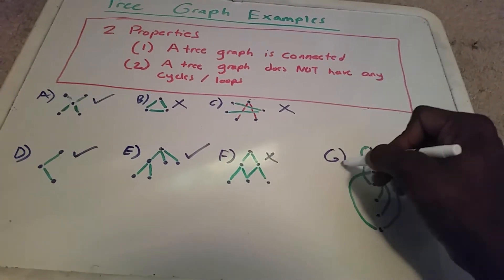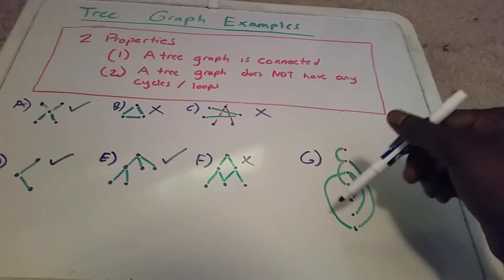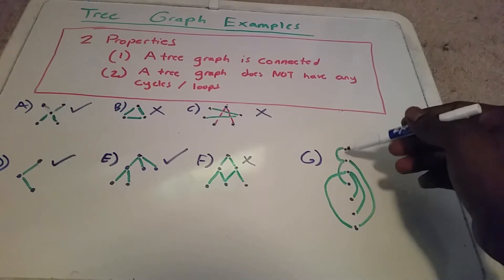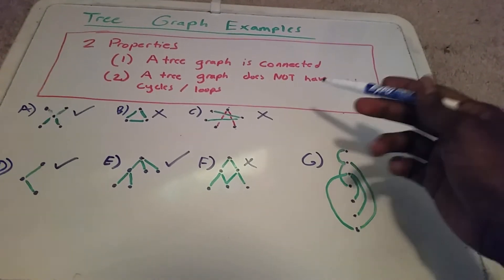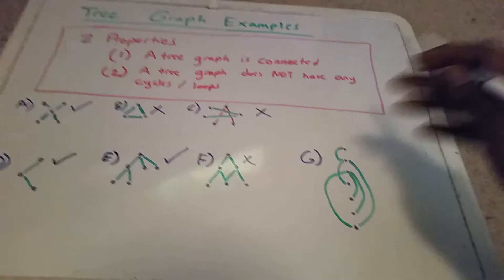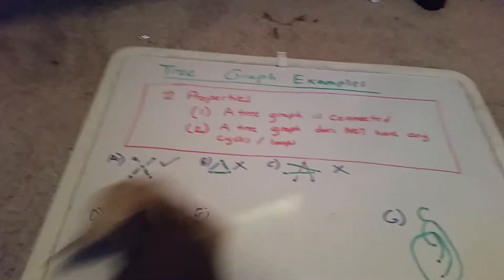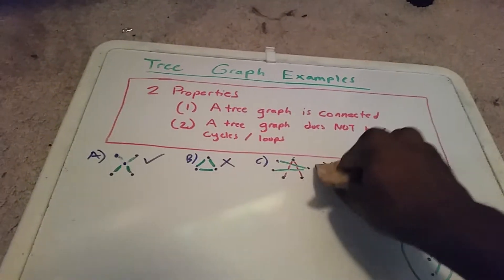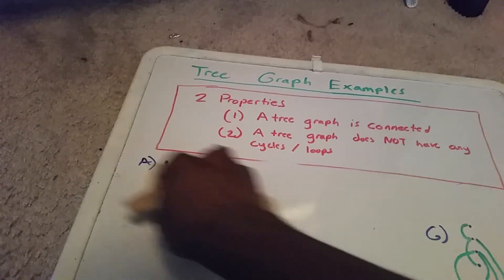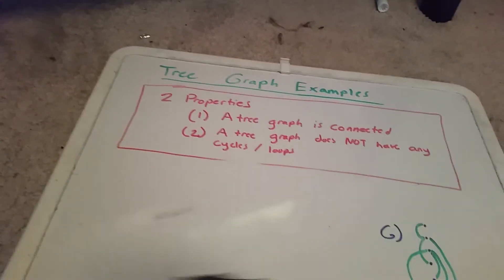And here, the final one — this is actually a tree graph. Every node is connected, and there are no cycles here. So you may be wondering, why do they even call it a tree graph if it can look like that? Well, the reason is because we can rewrite this as a tree graph.